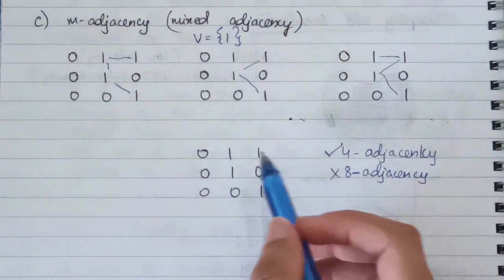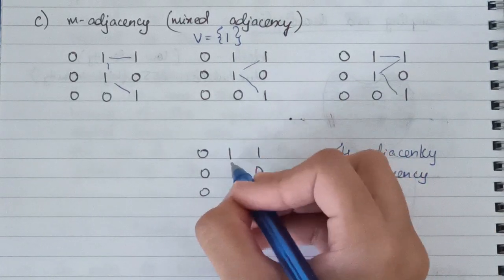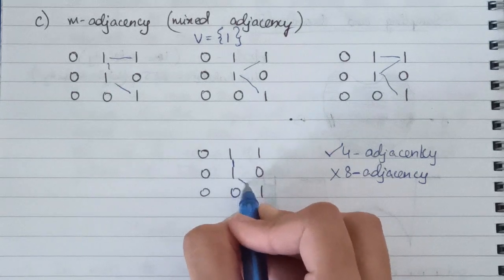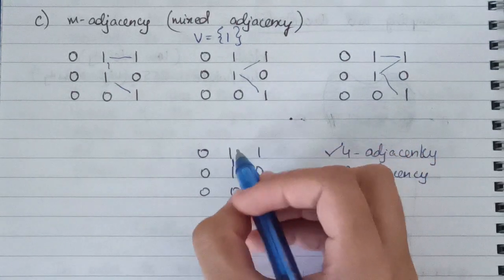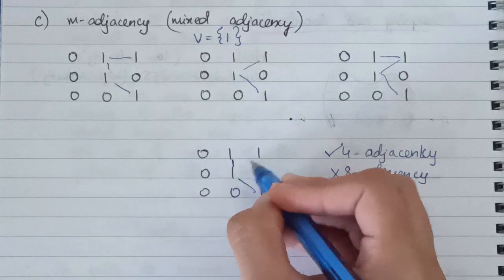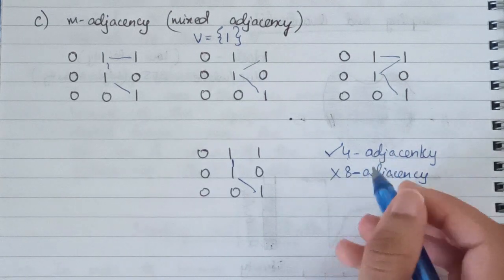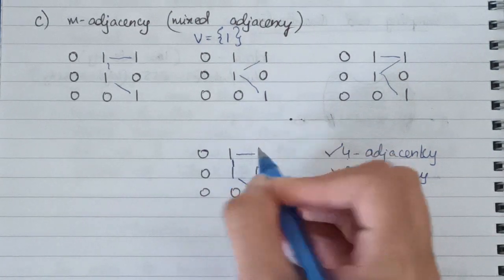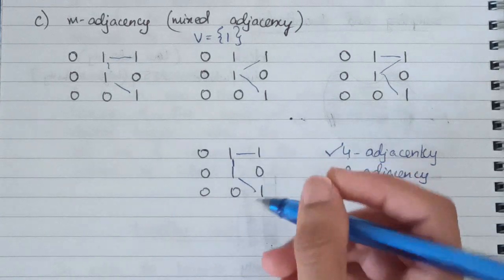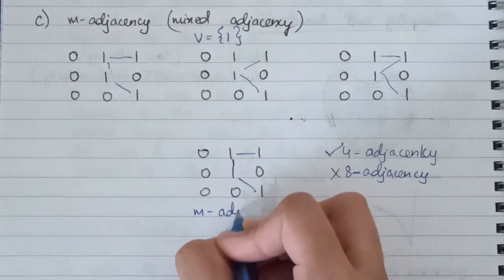Looking at this image again: these two elements can be connected only using four adjacency, so we connect them that way. These two elements can be connected only using eight adjacency, so we connect those. These two elements can be connected using both four and eight adjacency — in that case, we connect only using four adjacency, giving a unique path. This particular example illustrates mixed adjacency.